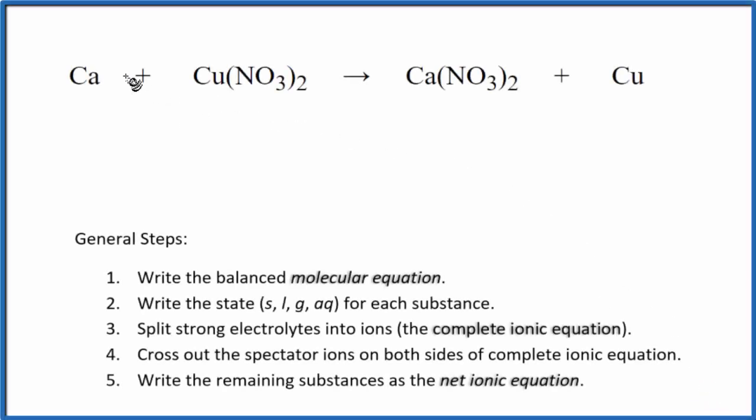In this video, we'll write the balanced net ionic equation for Ca plus Cu(NO3)2. This is calcium and this is copper 2 nitrate.